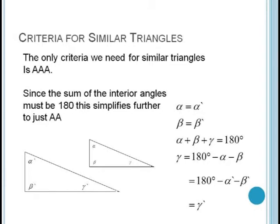This gives us an easy test for similarity, which is angle angle angle. But as we said earlier, since the sum of three angles must be 180, then really knowing two pairs of angles will force the third angle to be the same. So really all we need to show two triangles are similar is angle angle or AA.